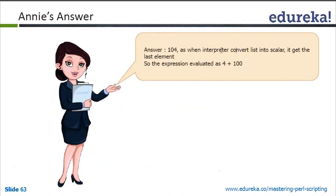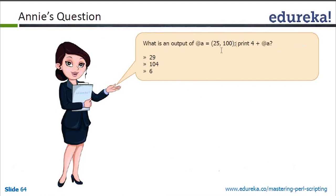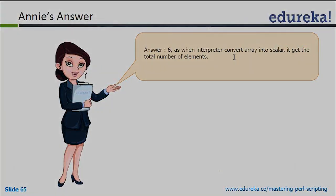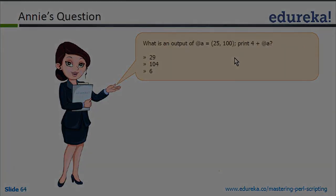For '$a = (25, 100)' and 'print 4 + @a': we assign an array with two elements, 25 and 100. We covered that when assigning an array to a scalar context, it takes the size. The array has 2 elements, so it will be 4 plus 2 equals 6. This gives the total number of elements, and that is what is added to 4.